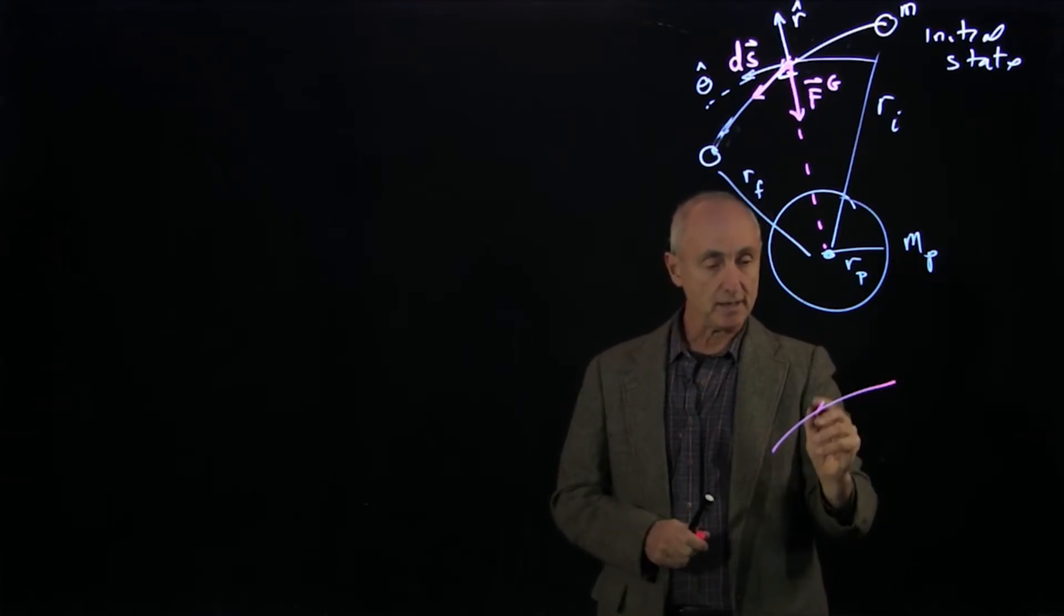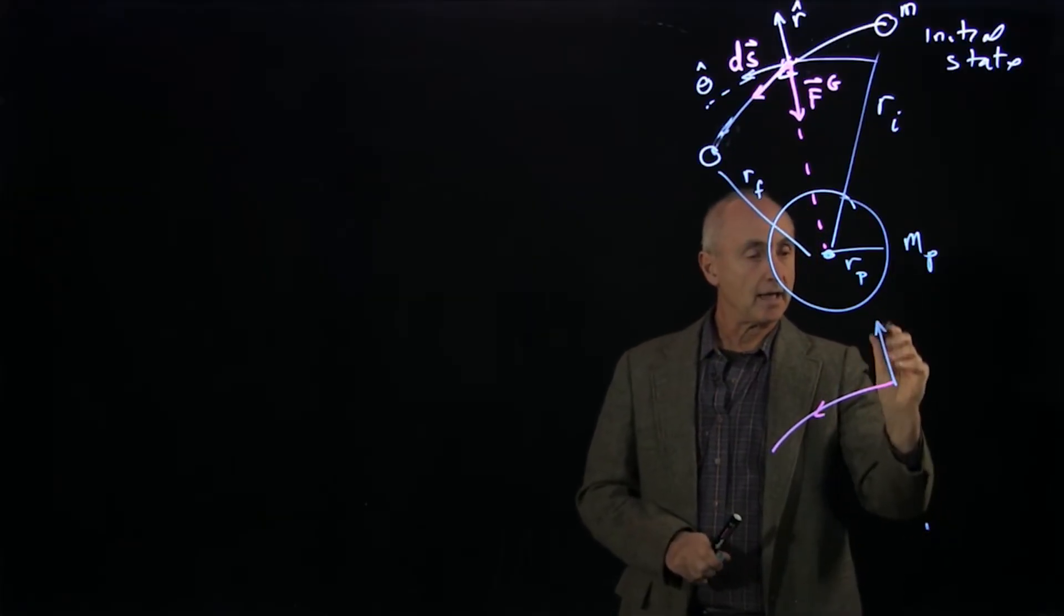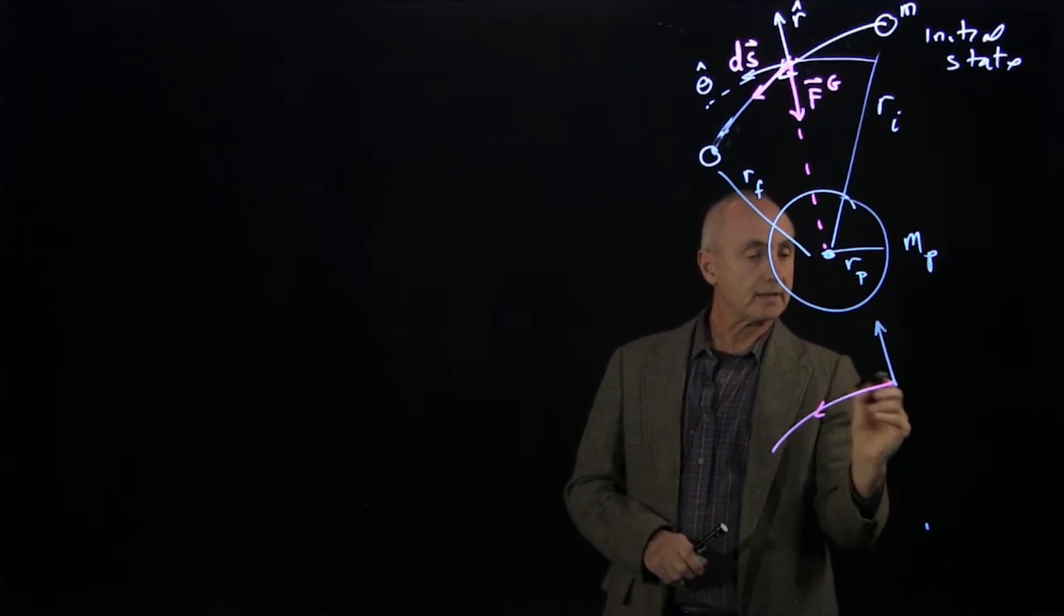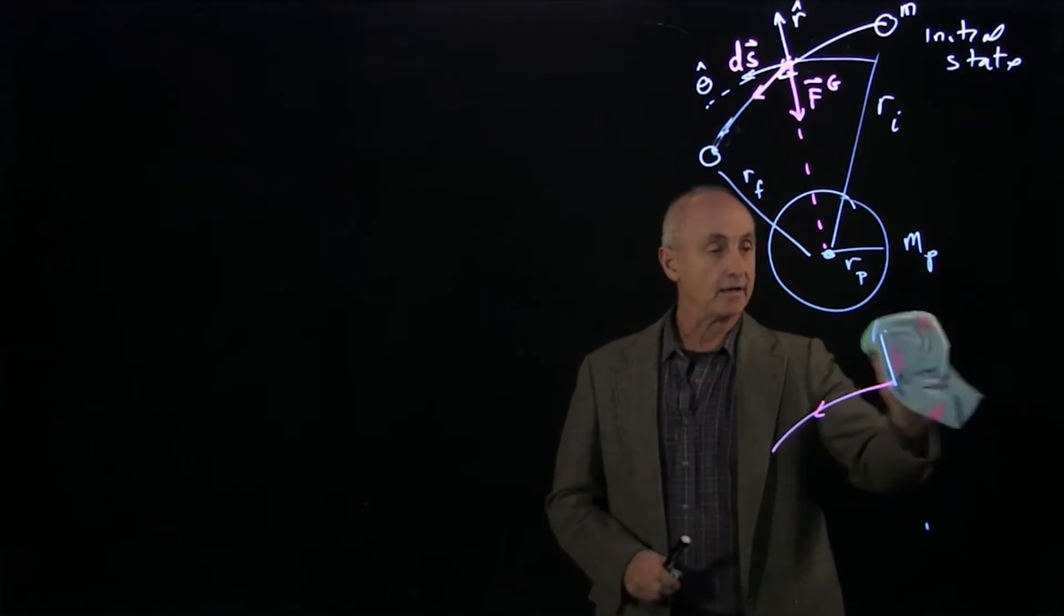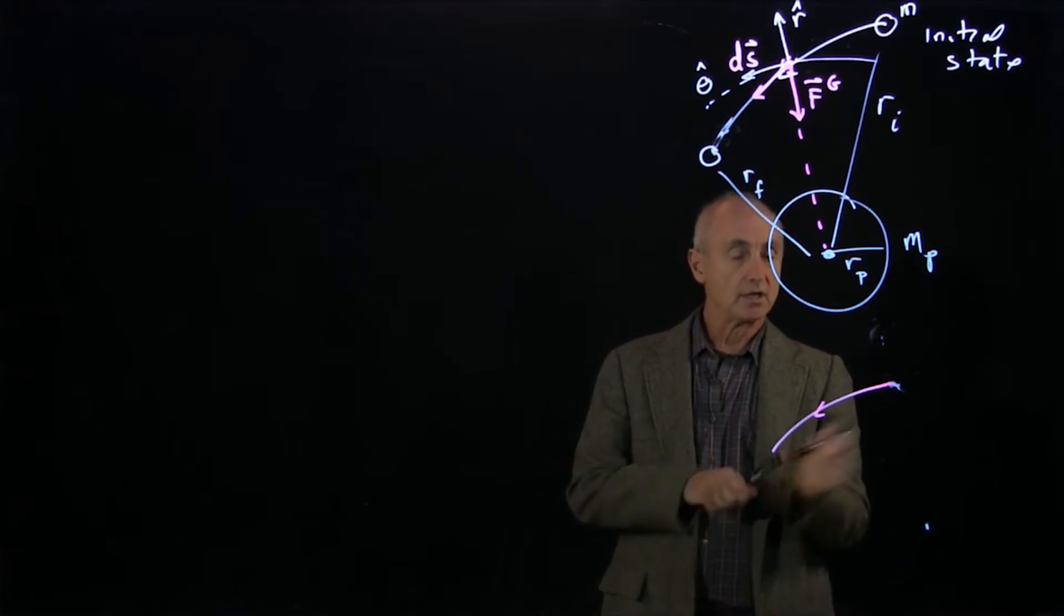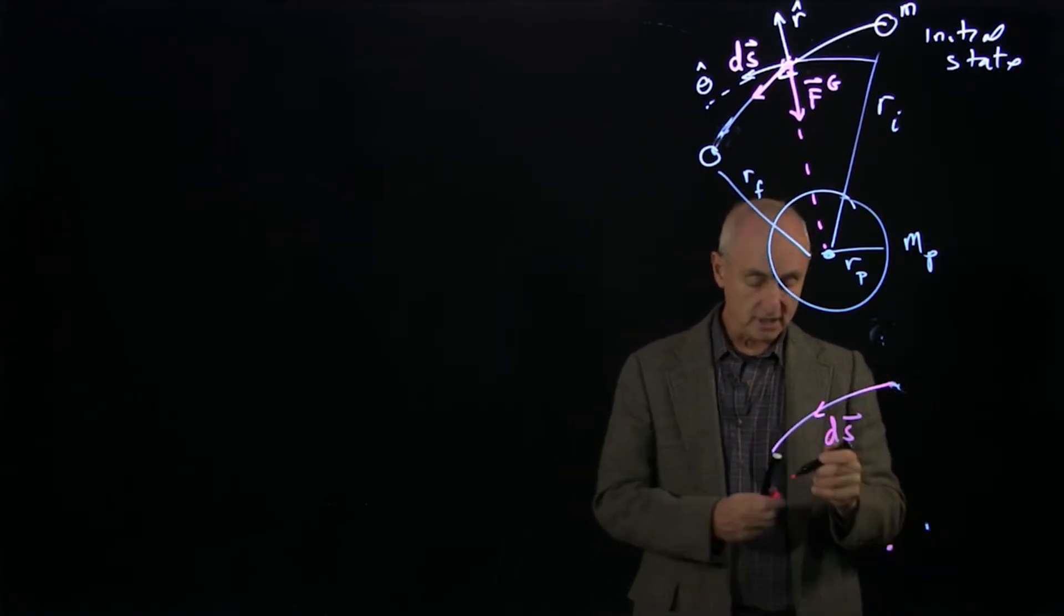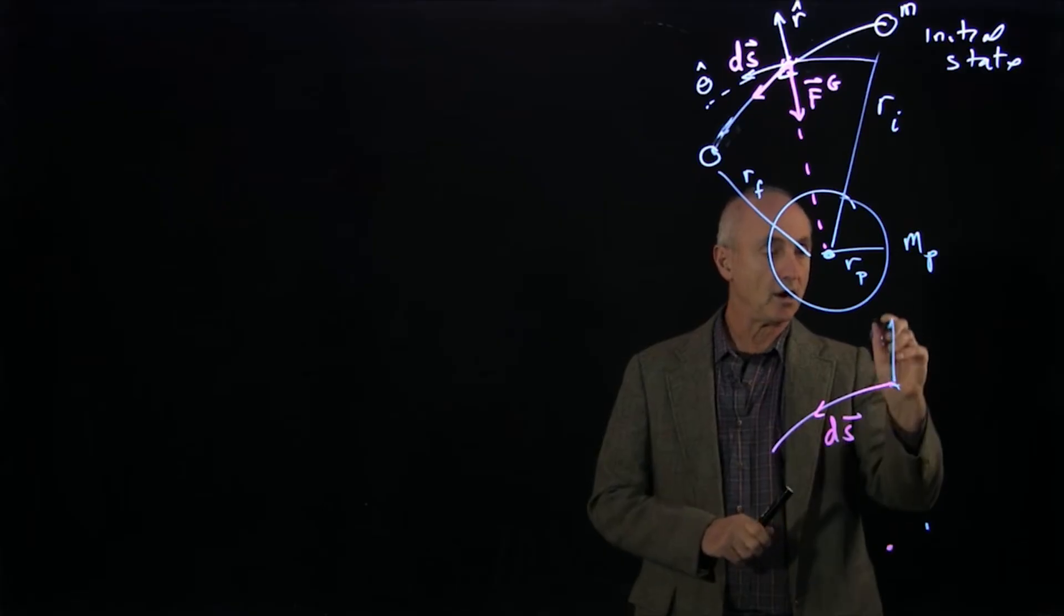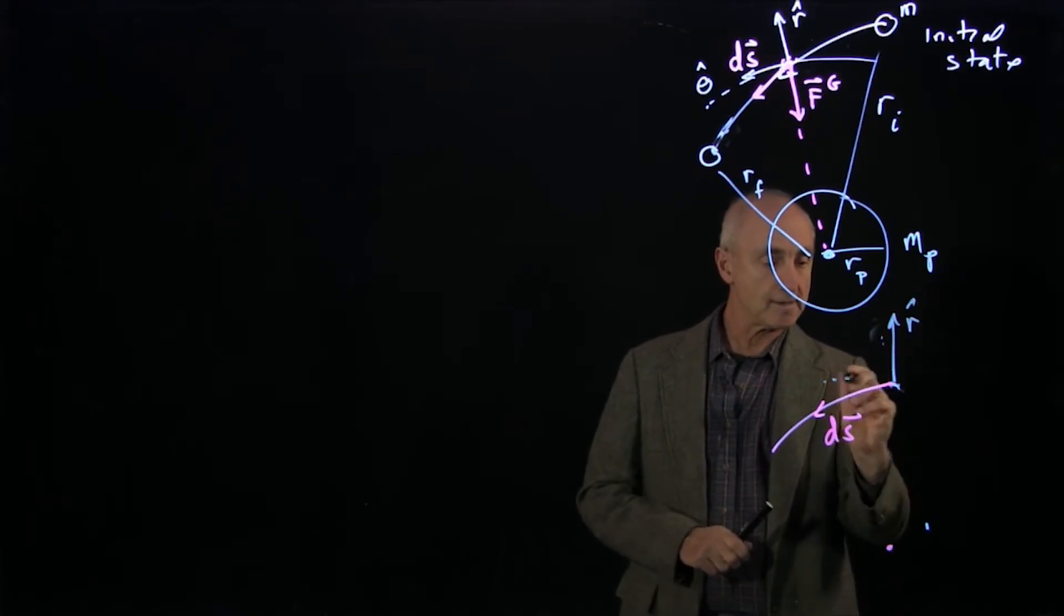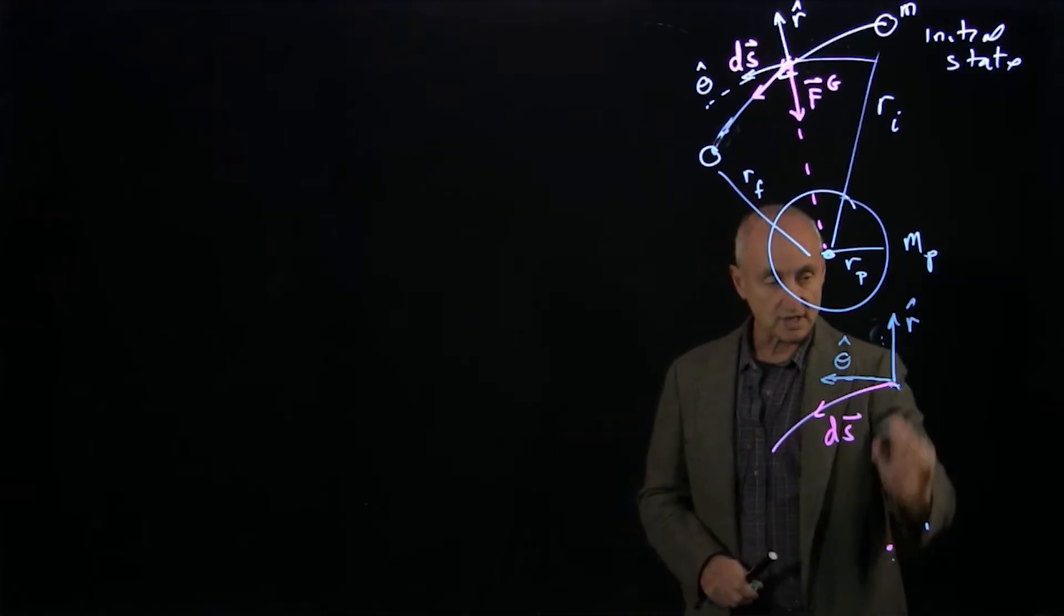Our displacement, let's imagine that our little ds vector is pointing like this. Our center point here, we have the r hat pointing radially outward, and the theta hat pointing towards the center.